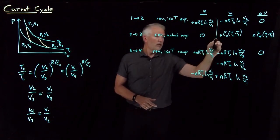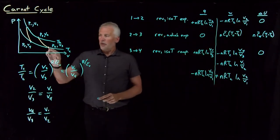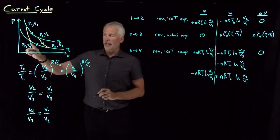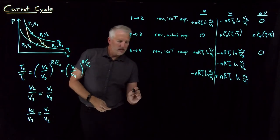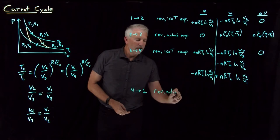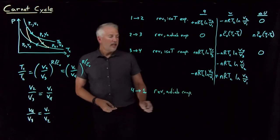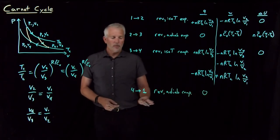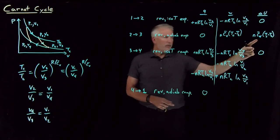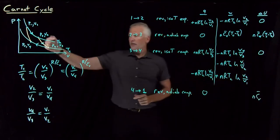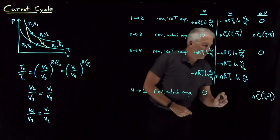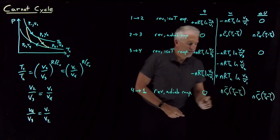So this column is our heat, this column is our work. I've expanded, expanded again, compressed to P4 and V4. My last step is to compress the rest of the way from V4 back to V1. Going from step 4 to step 1 is another reversible and adiabatic step — this one is a compression. Like any reversible adiabatic process, there's no heat. The work and delta U are the same number as in the adiabatic expansion, but now instead of changing from T_hot to T_cold, I'm changing from T_cold to T_hot — so this is just the same thing in reverse.